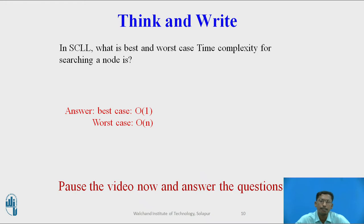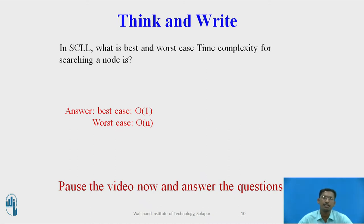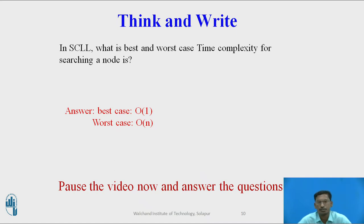The best case is O(1) when the element to be searched is the first node — only 1 comparison is required to find that the element is present at the first position, so the complexity is O(1).